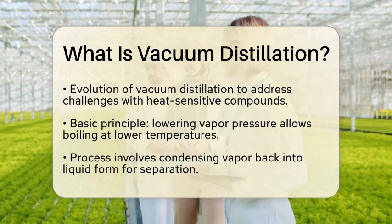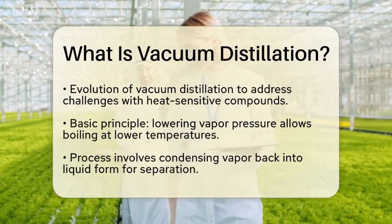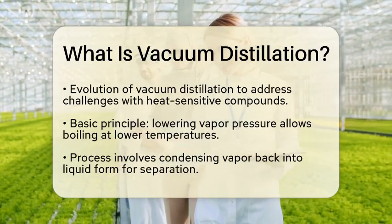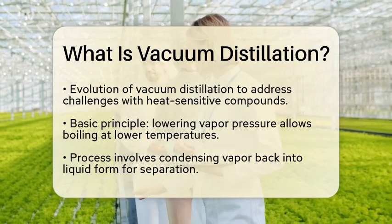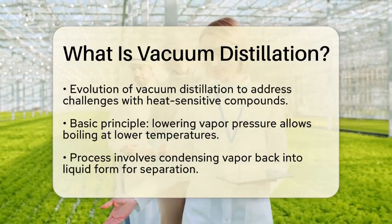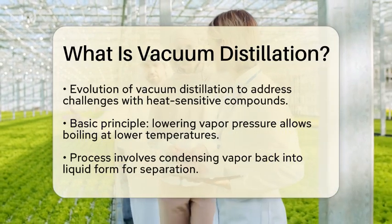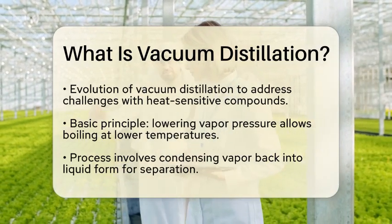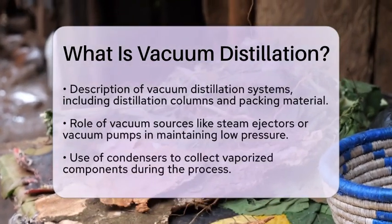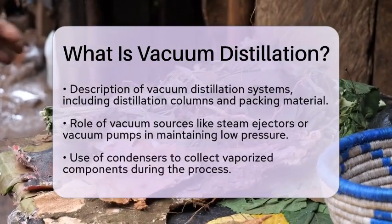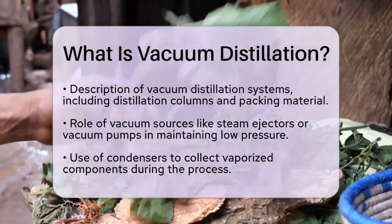The principle behind vacuum distillation is straightforward. When the vapor pressure inside a vessel containing a liquid mixture is lowered, a component can begin to boil at a temperature lower than its standard boiling point. The vapor produced is then condensed back into liquid form and collected separately, effectively separating it from the rest of the mixture.